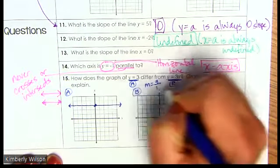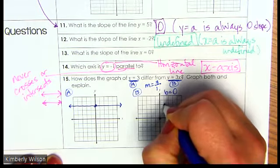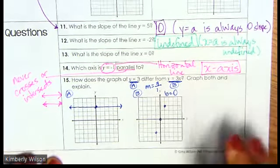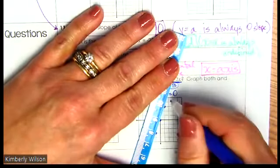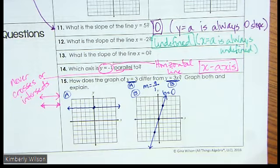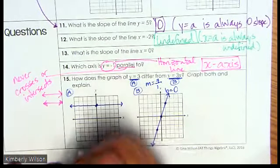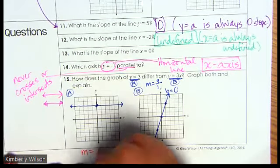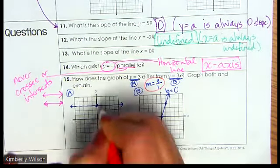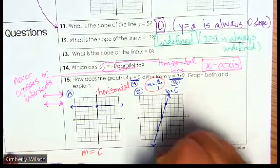So my slope is up 3 over 1, and I go in the opposite direction down 3 to the left. We play connect the dots. So explaining the difference: they don't have the same slopes. For y equals 3, the slope is zero. For y equals 3x, the slope is three. This one is a horizontal line; this one is a diagonal line.